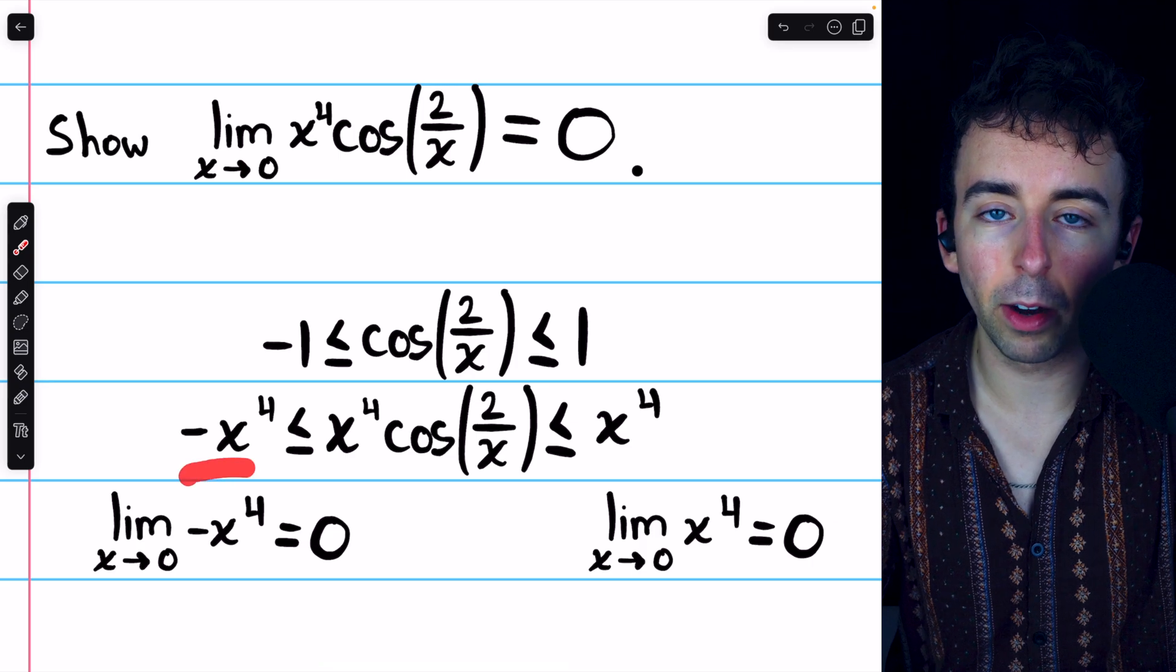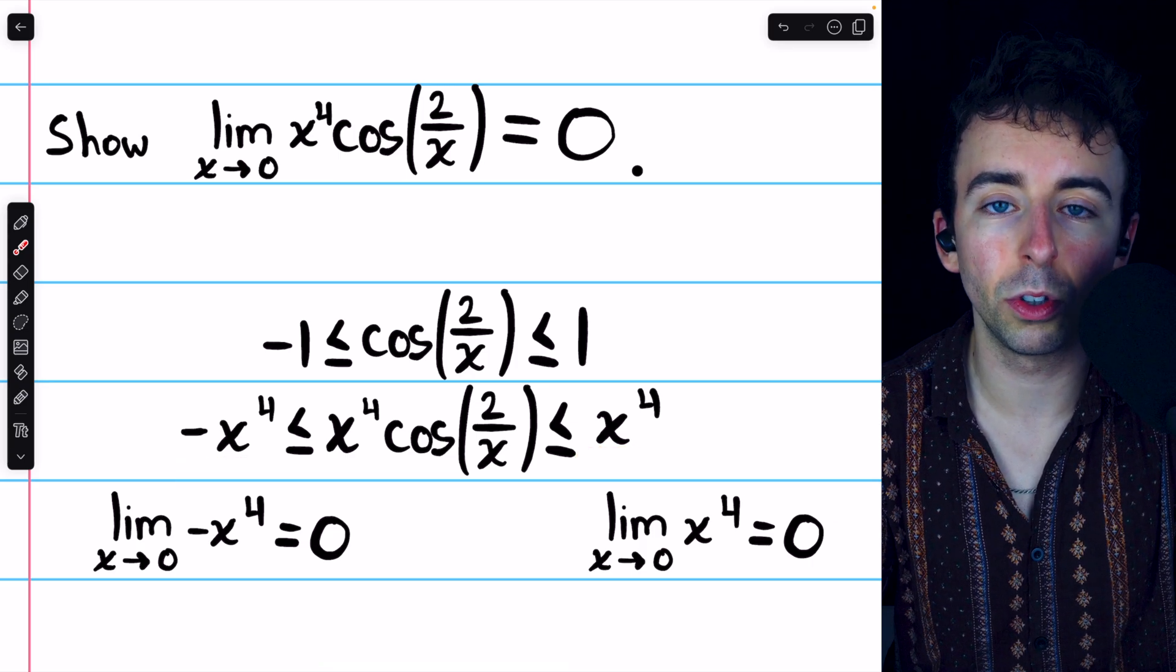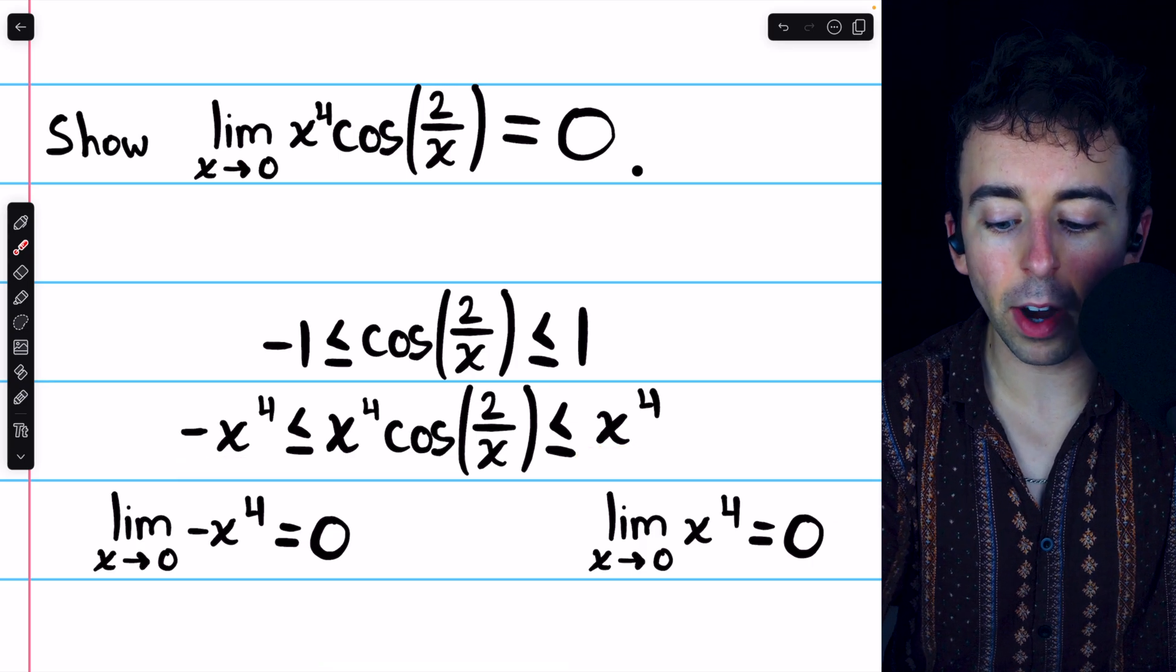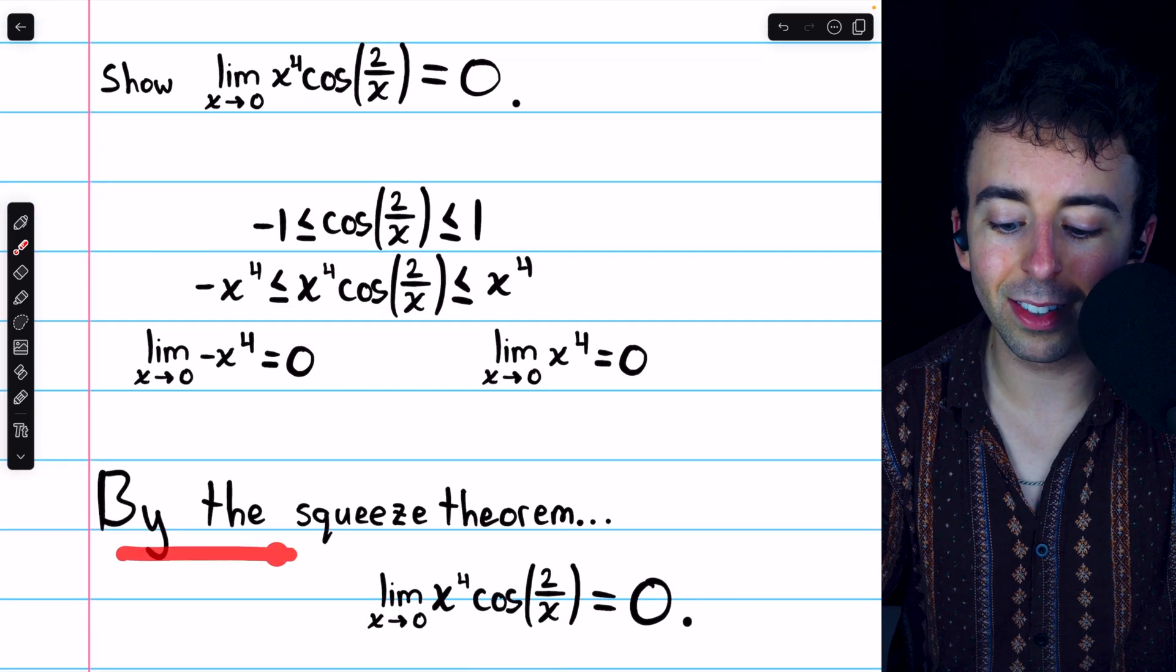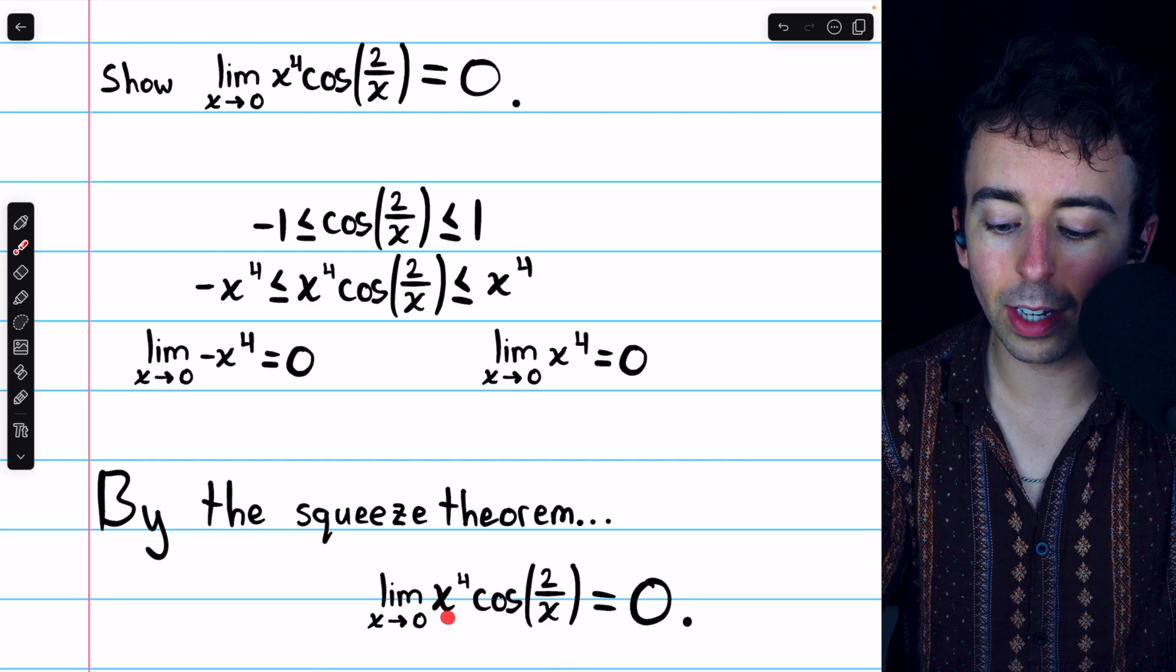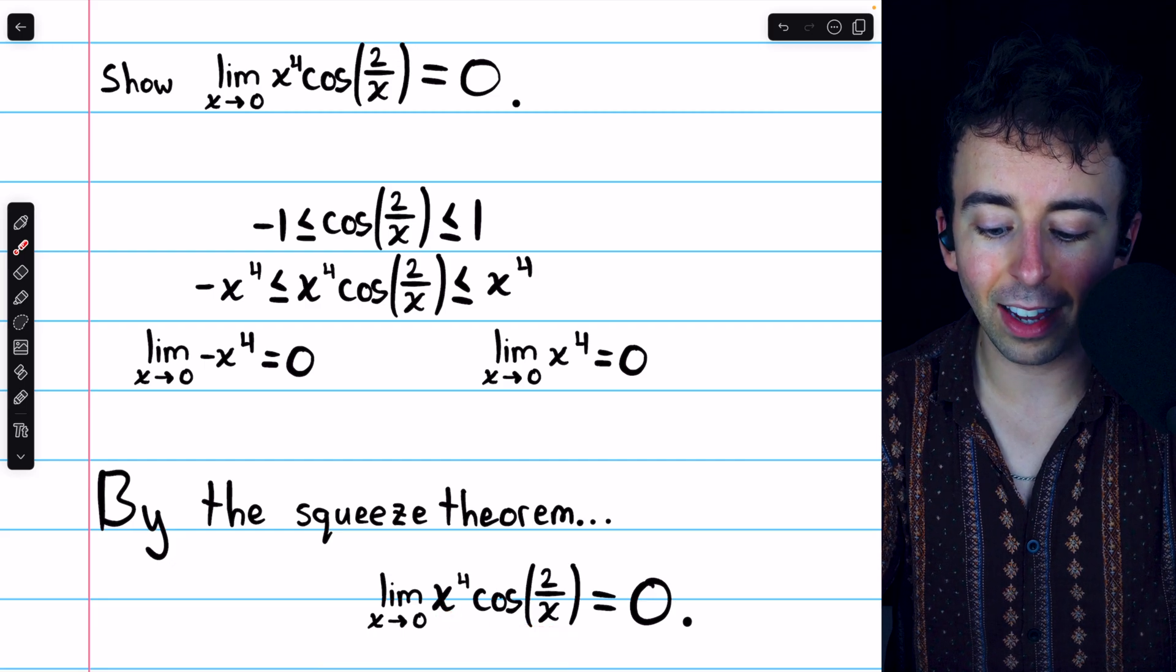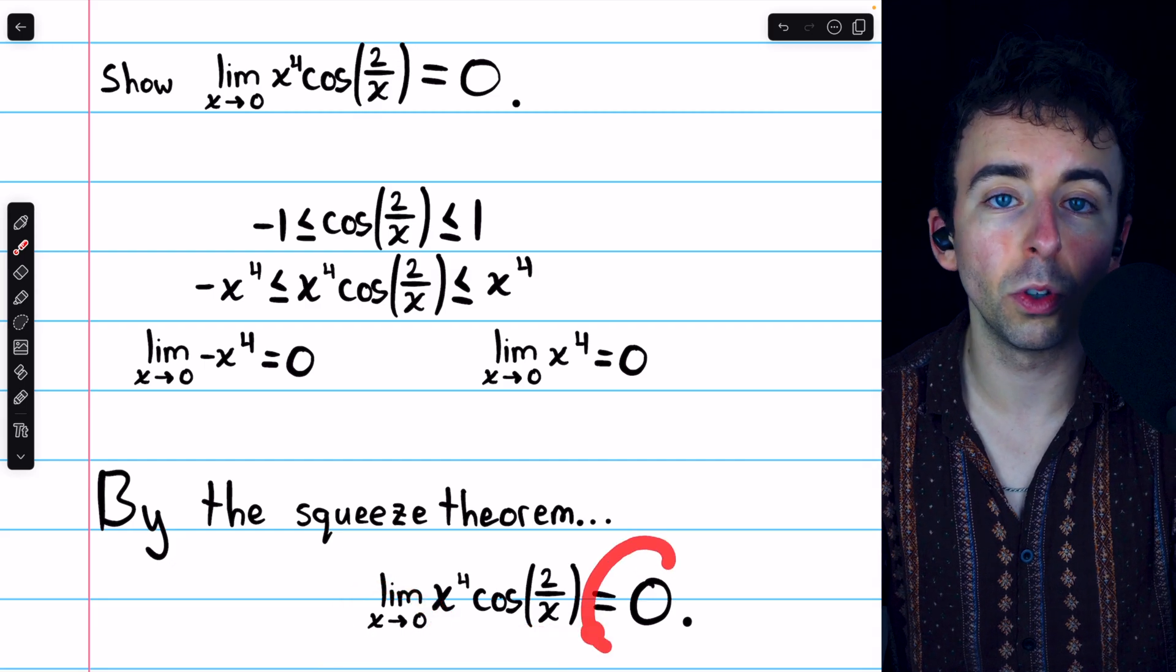Since the limits of the bounding functions are equal and they are equal to 0, the limit of the function squeezed between them must also be 0. And so, we conclude by the squeeze theorem, the limit of x to the 4 times cosine of 2 over x, as x approaches 0, is equal to 0.